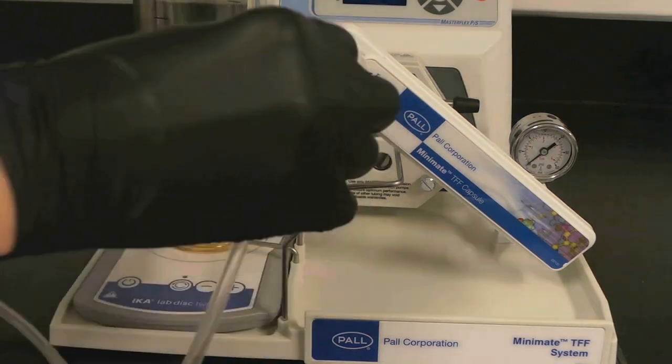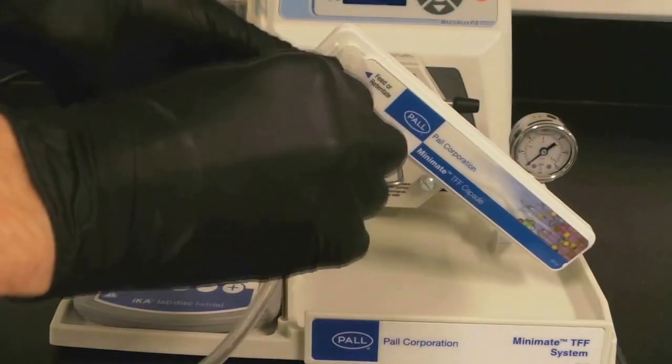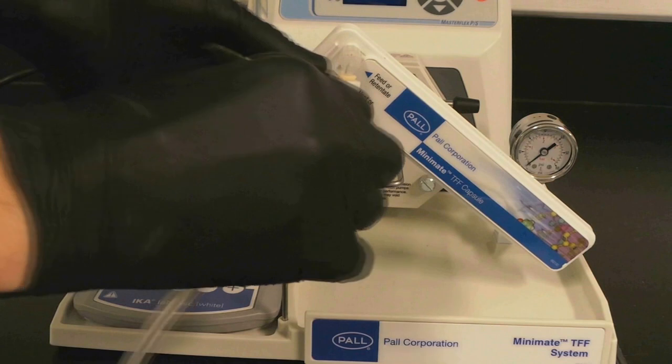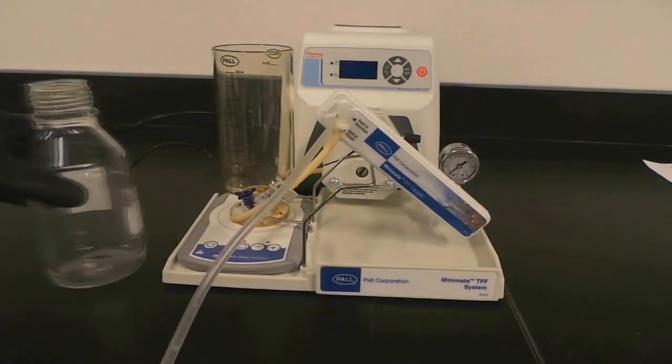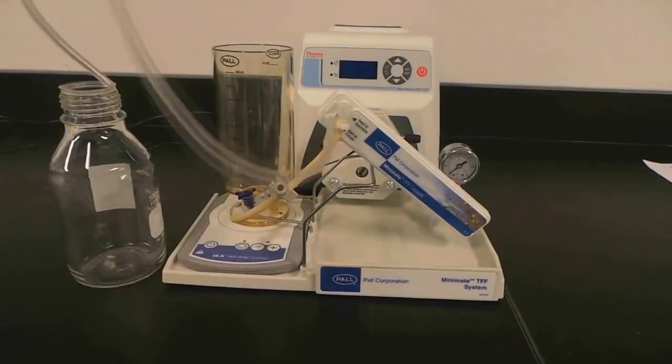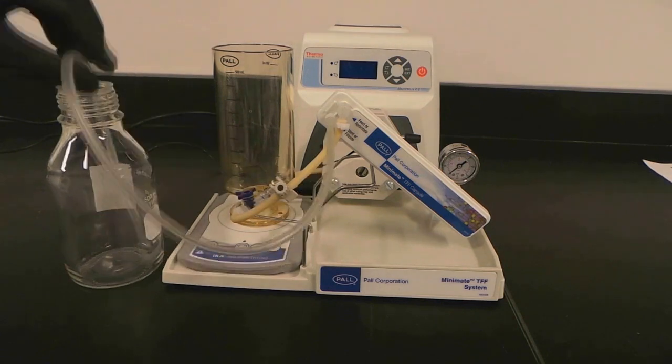Complete the initial tubing installation by attaching the long, clear tubing to the filtrate port. Finally, place the tubing into a flask, and your MiniMate system is now ready to run.